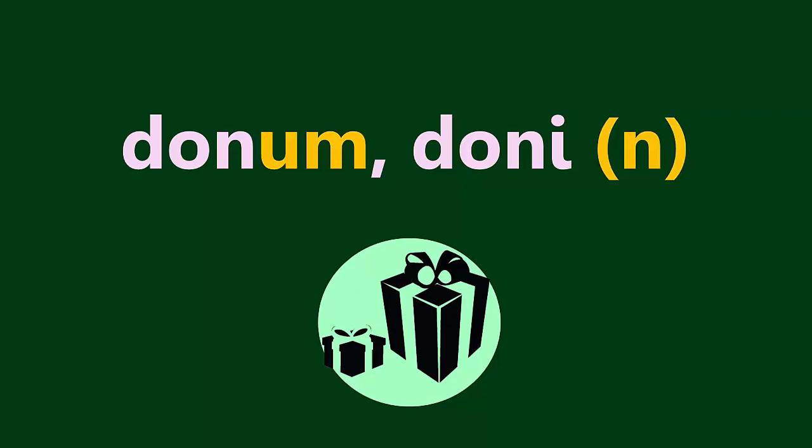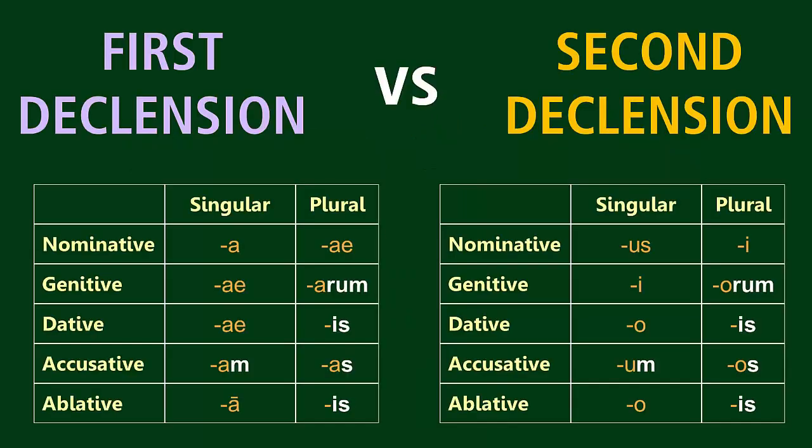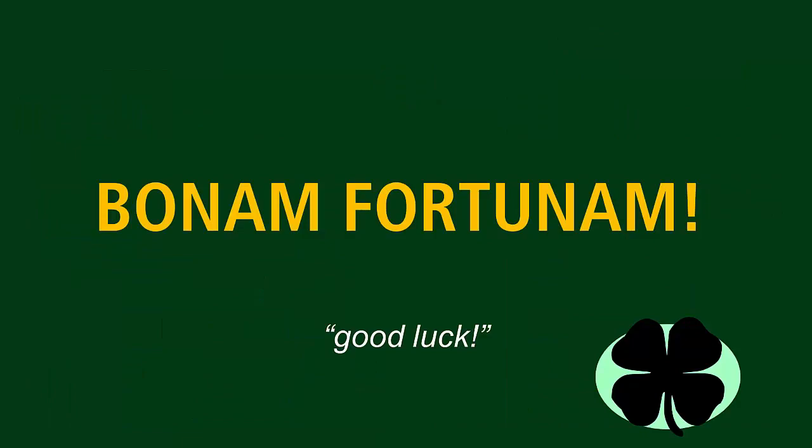Now, in the next few lessons, we are going to be looking at the new endings for the second declension. As we do that, keep an eye on the patterns and the ways that the first and the second declension are similar and different from one another. In Latin, once you learn the first few sets of endings, the rest follow similar patterns to those that you have learned before. If you keep an eye on these patterns, then learning the endings will be an absolute cinch. Good luck, and see you next time.